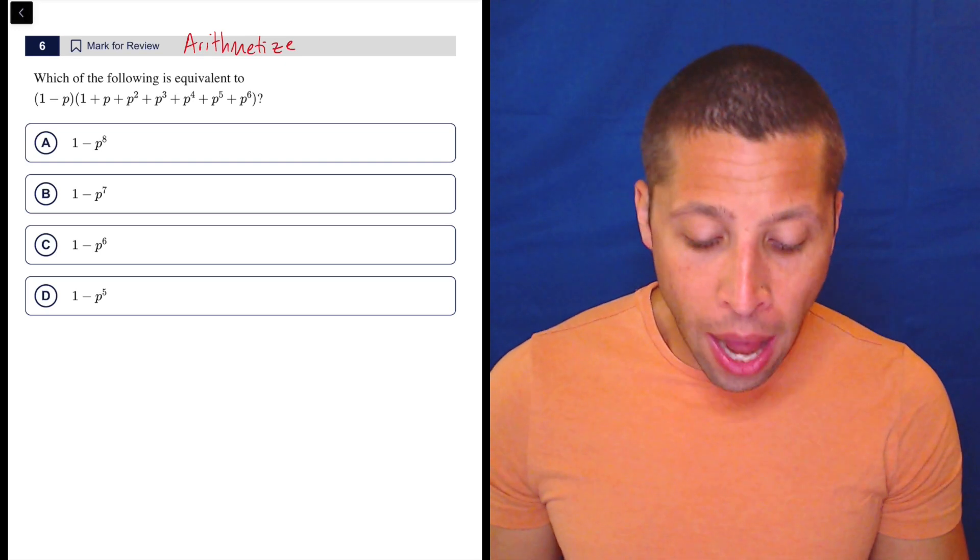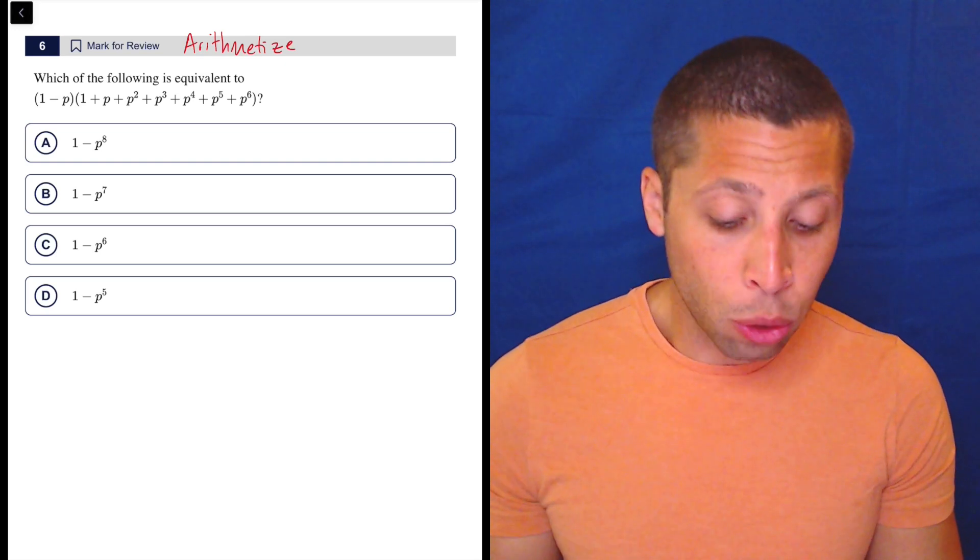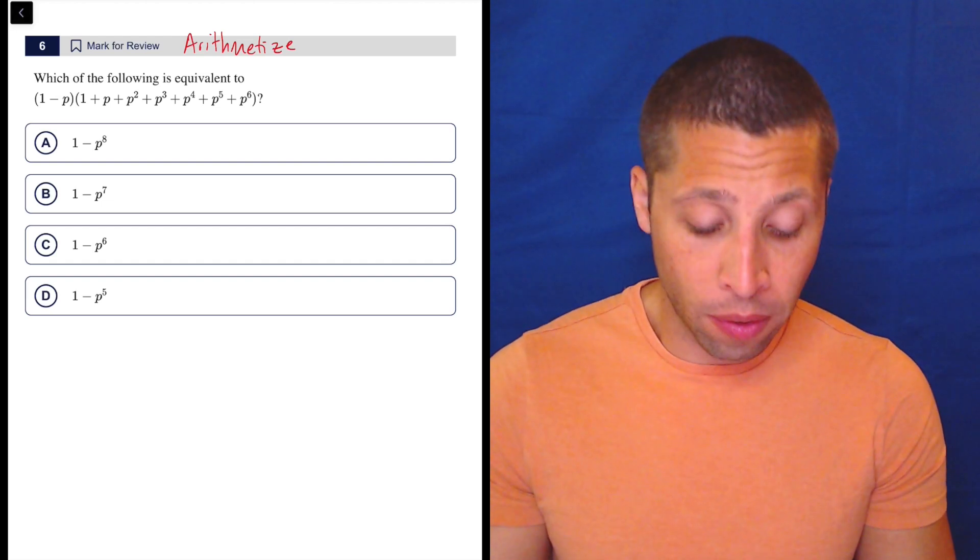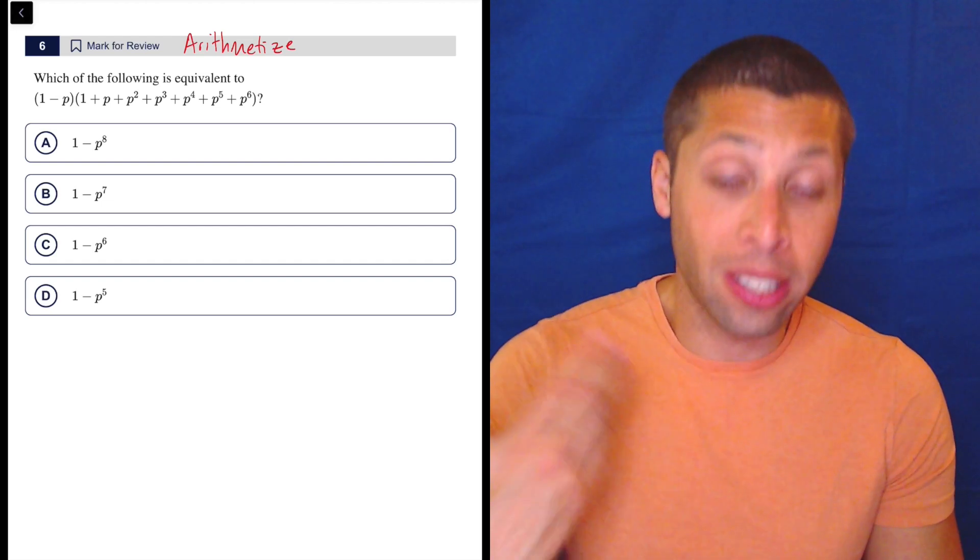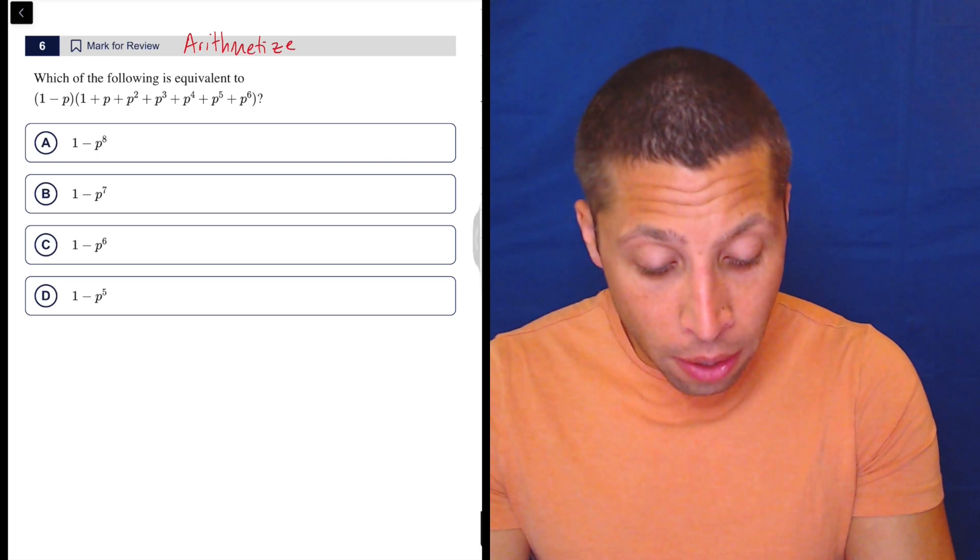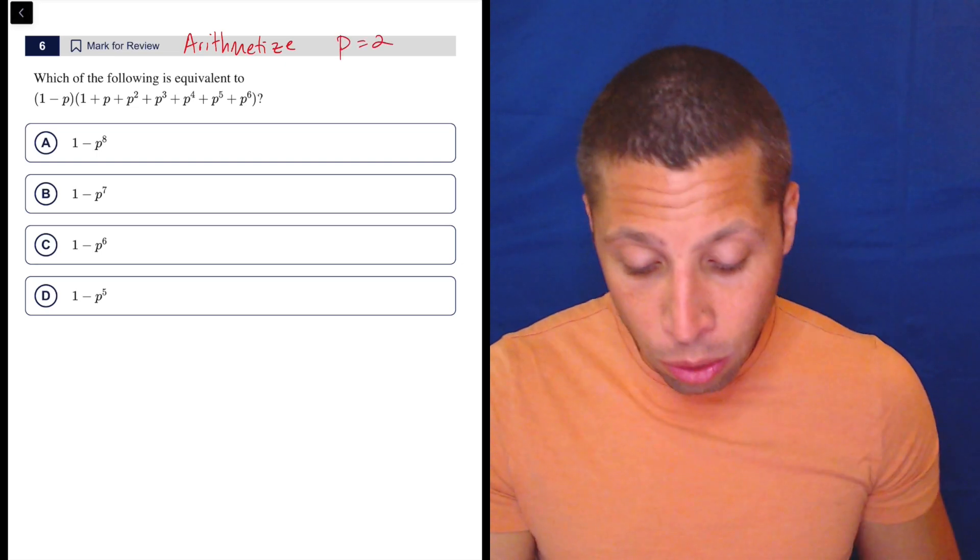And so I would just arithmetize. I would not do zero here. I would not do one, because if I look at the answer choices, both zero and one aren't going to change if I do zero to the eighth versus zero to the seventh, one to the sixth versus one to the fifth. It's not going to make a difference. But if I do two, then I've got some little difference.